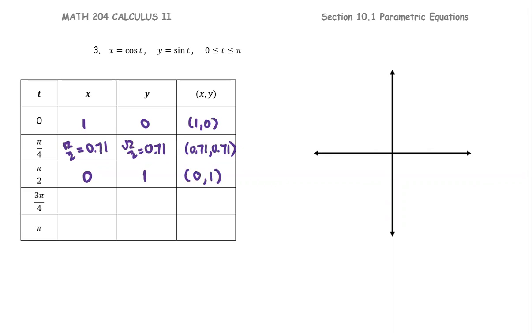At t equals 3 pi over 4, cosine 3 pi over 4, since 3 pi over 4 is in the second quadrant, cosine is negative. We have negative 0.71, but the sine value of 3 pi over 4 is still positive, so 0.71. The ordered pair is (-0.71, 0.71).